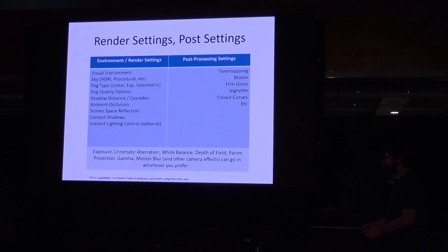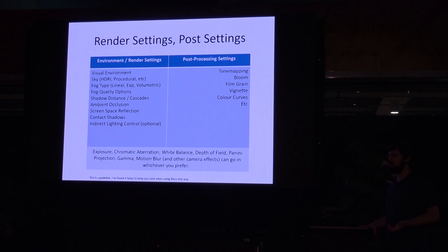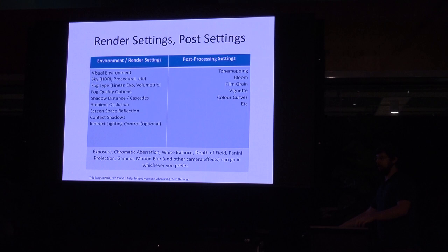Contact shadows are for small things — if you want the buttons on your T-shirt to cast shadows, the depth map shadow map isn't going to pick that up, but contact shadows will, at the cost of sometimes looking a bit scratchy. Indirect lighting control is basically an override for ambient and specular lighting — if your ambient lighting is a bit too bright or too shiny, that's where you adjust it. The second profile type is post-processing settings: tone mapping, bloom, film grain, vignette, color curves — anything that changes the style of the image. Keeping these separate means you know where to find things and don't have to dig through a giant list.